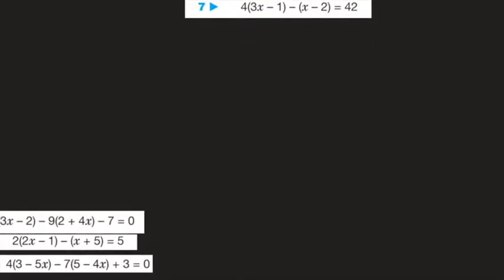We don't want to divide by 4, so: 4 times 3x is 12x, minus 4. There's actually a minus 1 outside the second bracket if you get confused by just a negative sign — so negative 1 times x is negative x, negative 1 times negative 2 is positive 2, and that equals 42 — the answer to the universe and everything!